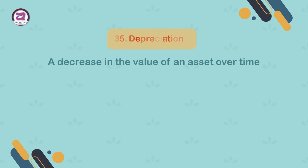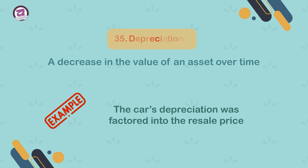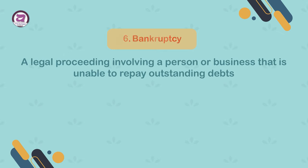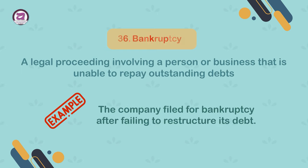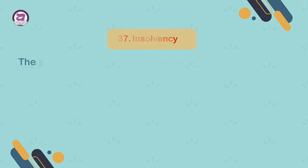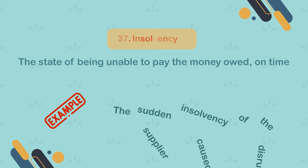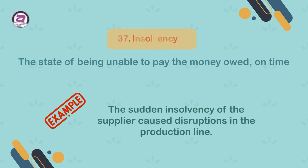35. Depreciation. A decrease in the value of an asset over time. Example: the car's depreciation was factored into the resale price. 36. Bankruptcy. A legal proceeding involving a person or business that is unable to repay outstanding debts. Example: the company filed for bankruptcy after failing to restructure its debt. 37. Insolvency. The state of being unable to pay the money owed on time. Example: the sudden insolvency of the supplier caused disruptions in the production line.